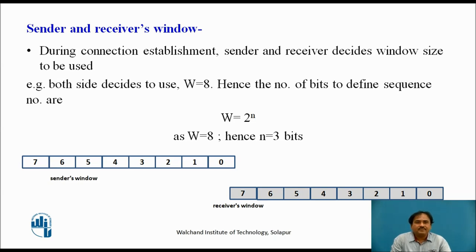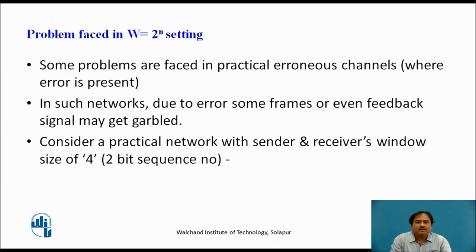Now as mentioned, both sender and receiver manage some window. We are showing windows on both sides — one at the sender side, other at the receiver side — using a 3-bit sequence number. Now let's understand some problems faced during practical communication with the window setting set to w equal to 2 raised to n.